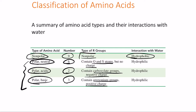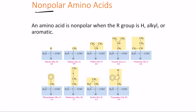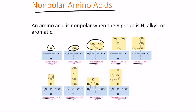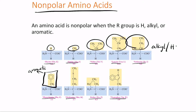The nine nonpolar amino acids are glycine, alanine, valine, leucine, isoleucine, phenylalanine, methionine, proline, and tryptophan. The first five — glycine, alanine, valine, leucine, and isoleucine — have alkyl or hydrogen R groups. Phenylalanine and tryptophan have aromatic R groups. Methionine has an alkyl group containing a sulfur (sulfide-based structure). Proline has a cyclic alkyl group.